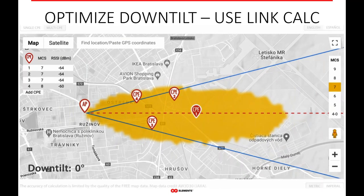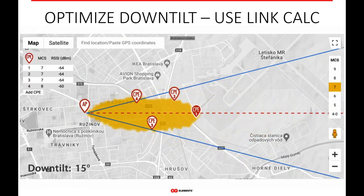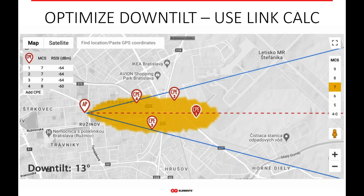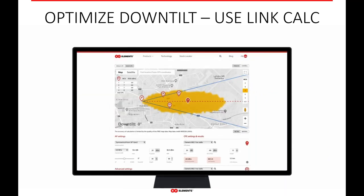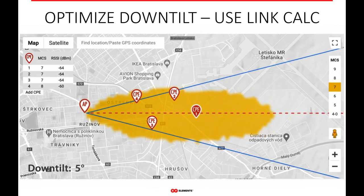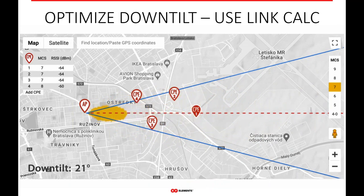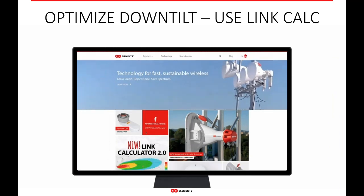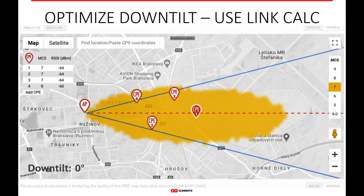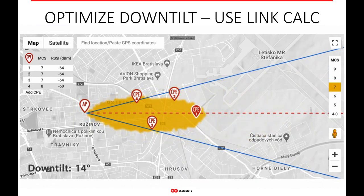One of the best tools you have is our online calculator on our website. It allows you to pick the antenna you want and adjust the down tilt up and down, so you can see what the optimal down tilt will be for your furthest client. It helps you figure out which horn to use and what down tilt you may need. If your coverage area grows later, you can climb the tower and remove some of the down tilt to make the signal go a little farther.